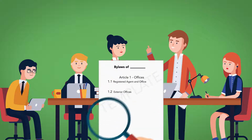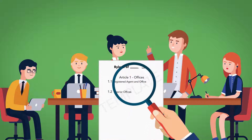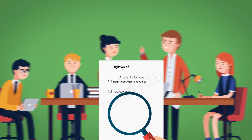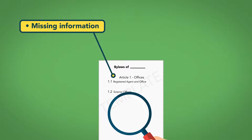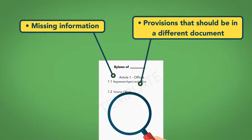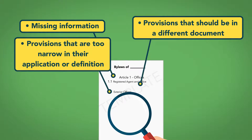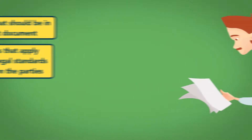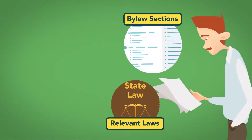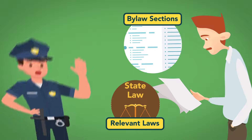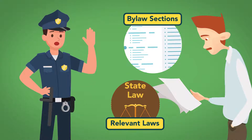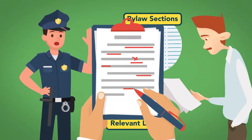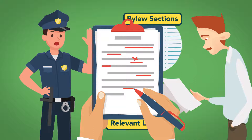We will examine some of the possible problem areas to look out for when relying on templates, including missing information, provisions that should be in a different document, provisions that are too narrow in their application or definition, and provisions that apply inapplicable legal standards of conduct to the parties. As we examine the selected bylaw sections and the relevant governing laws, we'll identify potential legal problems and how the governing agreement drafters might modify the document to avoid those problems.